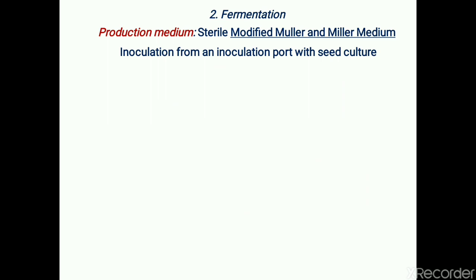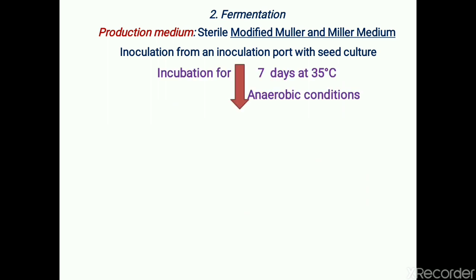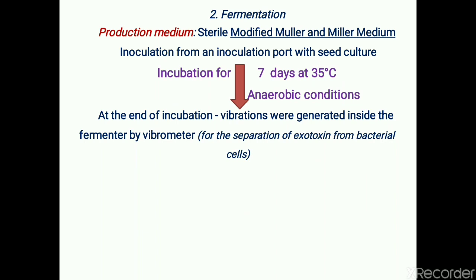The second step is fermentation. The production medium used during fermentation is modified Mueller and Miller medium. It is inoculated from an inoculation port with seed culture in a fermenter, and incubation continues for seven days at 35°C under anaerobic conditions.